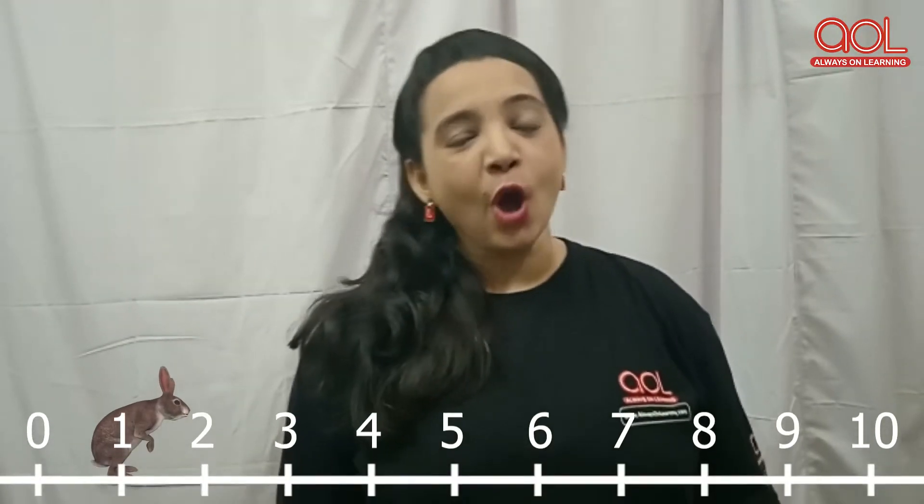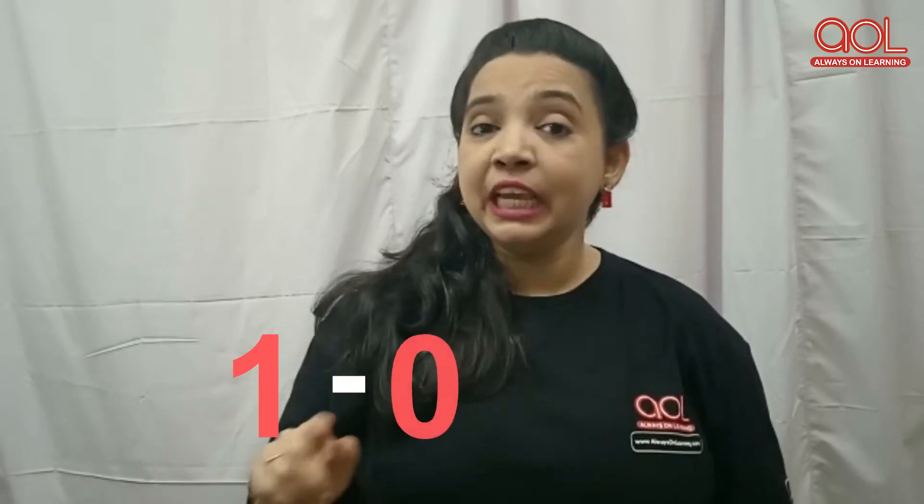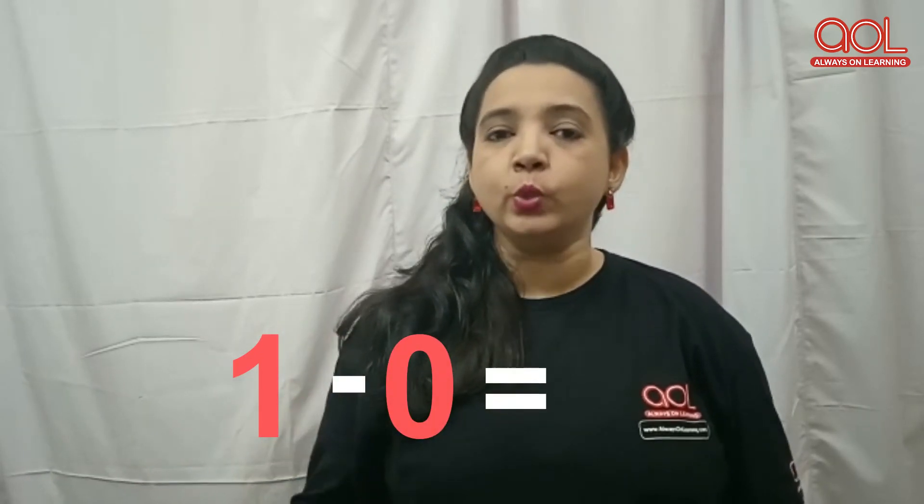So, do you want to know, kids, where Binny wants to go next? Binny is on number 1 and planning to hop. But as Binny is very tired and was unable to hop, Binny landed on the same number. So, what does it mean, kids? It means 1 minus 0 is equal to 1.